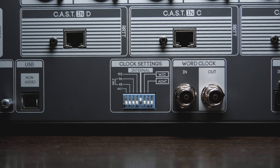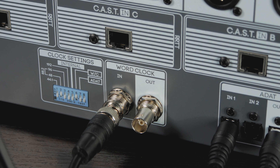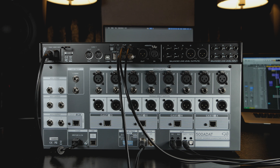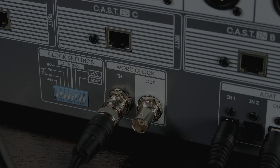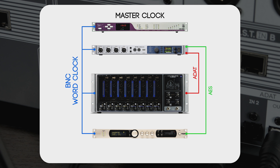DIP switch 6, labelled WordClock, configures 500 ADAT to synchronise with a device connected to its WordClock input. This switch should be up and on when 500 ADAT needs to slave off of your interface or clock generator via WordClock. Using WordClock to slave 500 ADAT to your device is especially useful if you need to synchronise several devices in a studio — for example, when you have an external clock master and need several devices to slave from that one master.